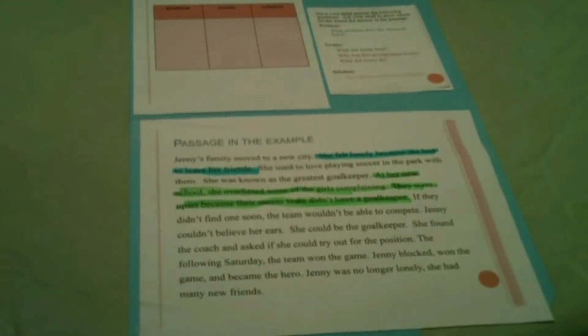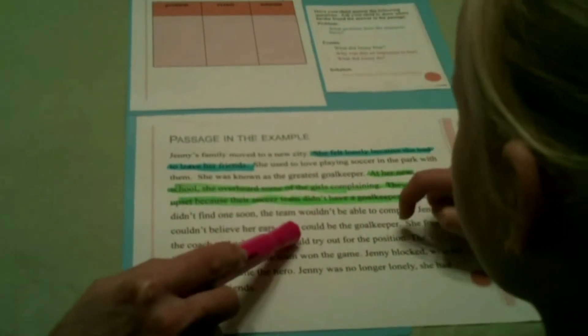Next question, in a reddish color: Why was this so important to her? She liked to play as a goalkeeper in soccer and she wanted to make friends. She could be the goalkeeper — that was her position that she was really good at. Let's find that in the text: She could be the goalkeeper. That answered the question for that event.